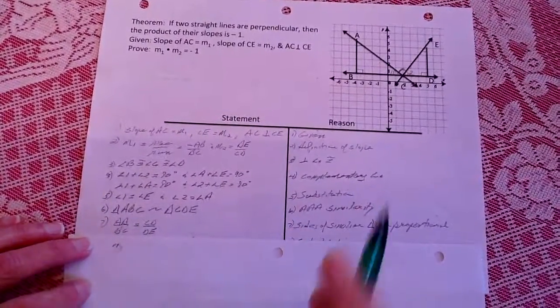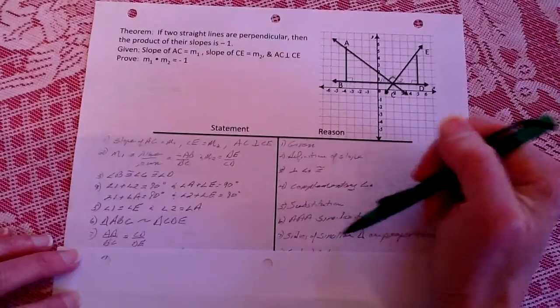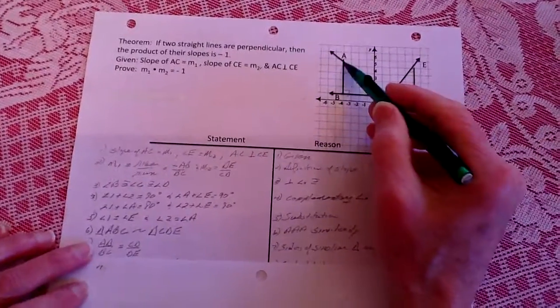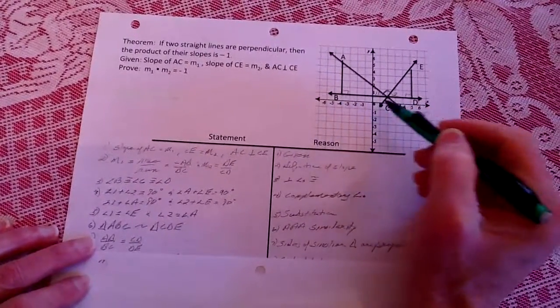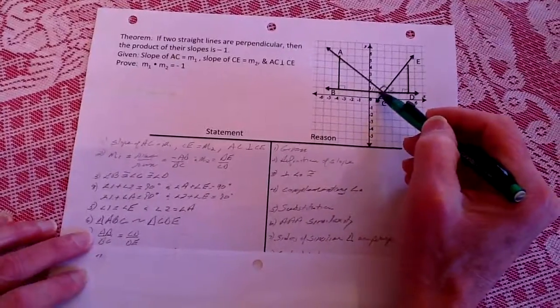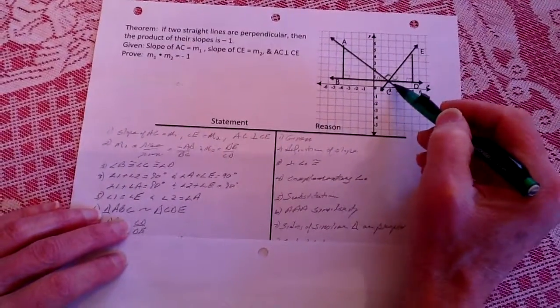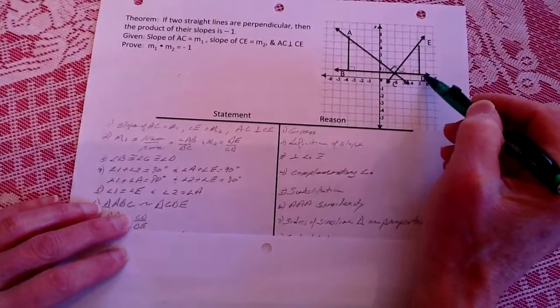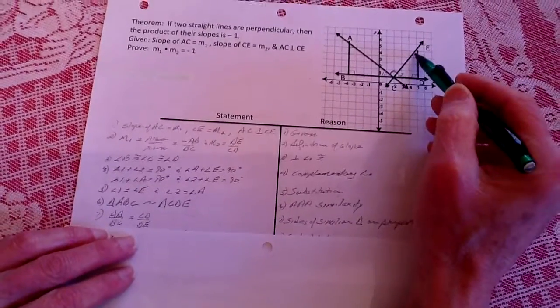From that, because of that, we know the proportionality based on similar triangles that AB to BC should be the same as CD to DE.